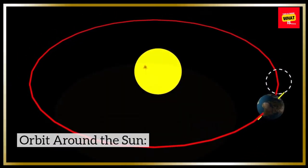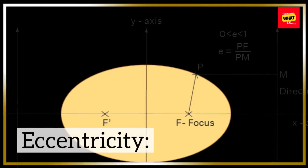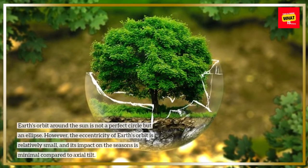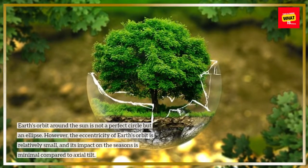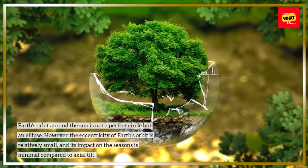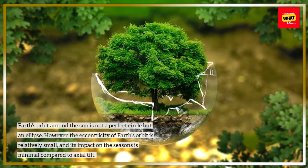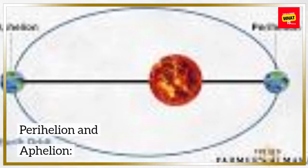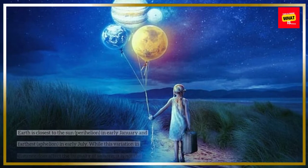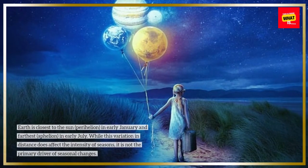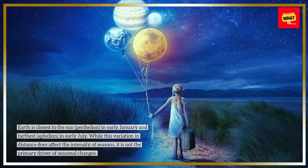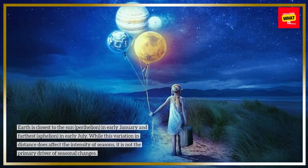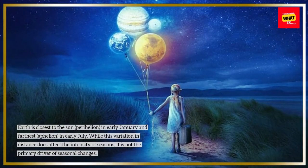Orbit Around the Sun — Eccentricity. Earth's orbit around the sun is not a perfect circle but an ellipse. However, the eccentricity of Earth's orbit is relatively small, and its impact on the seasons is minimal compared to axial tilt. Earth is closest to the sun, perihelion, in early January, and farthest, aphelion, in early July. While this variation in distance does affect the intensity of seasons, it is not the primary driver of seasonal changes.